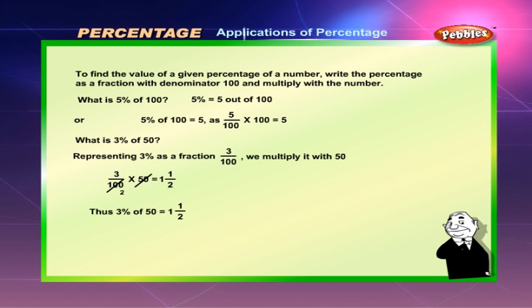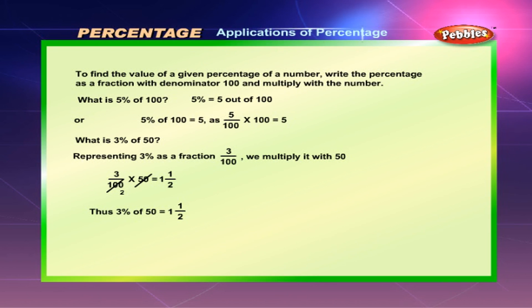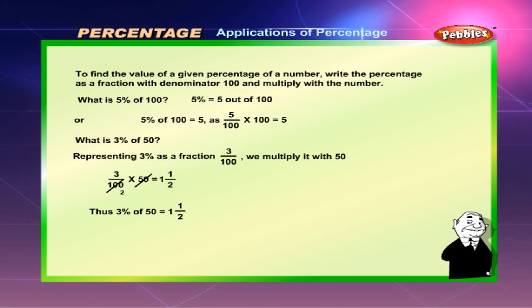What is 3% of 50? Representing 3% as a fraction: 3 divided by 100. We multiply it with 50. 3/100 × 50 = 1½. Thus, 3% of 50 is equal to 1½.